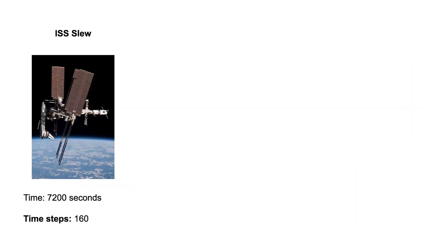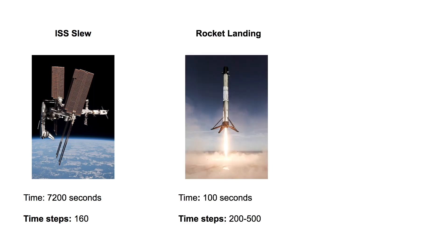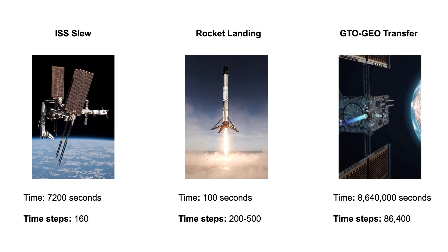In 2006, the ISS used trajectory optimization to slew the station 90 degrees over two hours. This optimization problem was discretized into 160 time steps. More recently, optimal control solutions for power descent guidance have had time spans of around 100 seconds, discretized into between 200 and 500 time steps. This paper focuses on a GTO to geo transfer, which can take up to 86,000 steps to simulate. This number is significantly larger than the previous two. Because of this, some techniques that work for the ISS slew and the rocket landing won't work for the GTO to geo transfer.